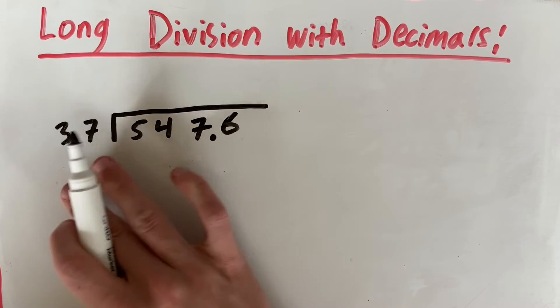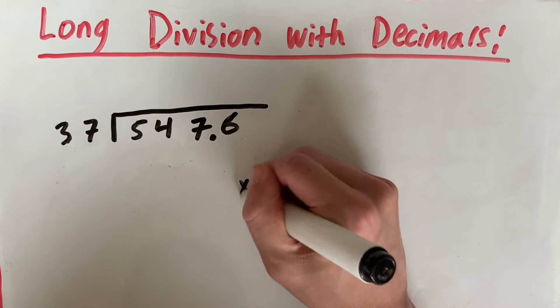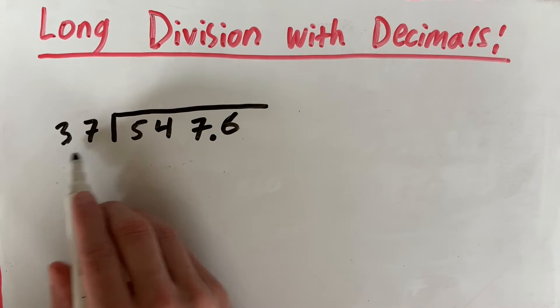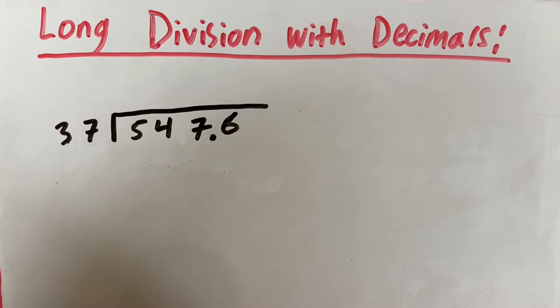And we haven't changed anything. Basically we've just multiplied both of these numbers by 10. And since we did that to both of these numbers, the equation is still balanced and we can do this. So now we're just going to solve this like a normal long division problem.